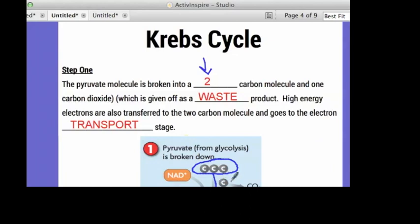The other carbon goes off as carbon dioxide and it goes off as waste because in humans, in the Krebs cycle, we don't like carbon dioxide. We'd rather just get rid of it. And the high energy electrons are also transferred to the two carbon molecule. So these high energy electrons from the NAD plus are passed in and transferred. And these things go off somewhere else to the electron transport chain.